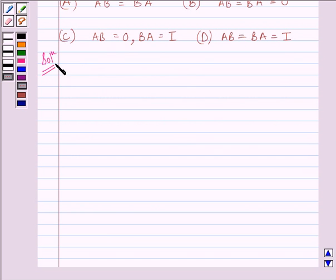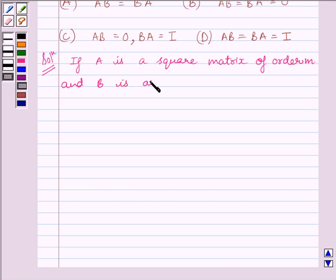By the definition of invertible matrices, if A is a square matrix of order m and B is another square matrix of same order m,